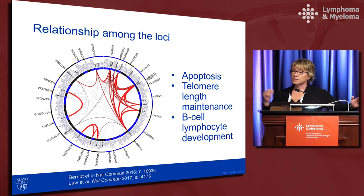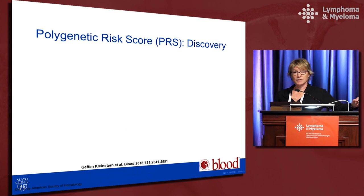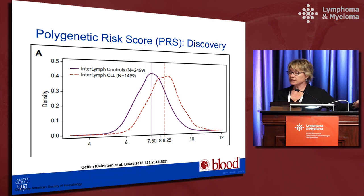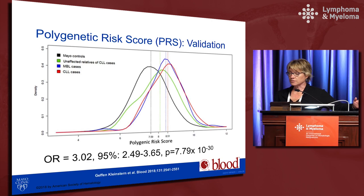Using these inherited genetic variants, a polygenic risk score was created. Each position contributes zero, one, or two copies of the high-risk variant. Postdoc Geffen Kleinstern calculated the average number of polygenic risk variants across 41 loci, and the distribution of this average is significantly higher in CLL cases than controls. This was validated in an independent sample — the red line (CLL cases) is clearly separated from the black line (controls), showing a strong, highly significant effect.